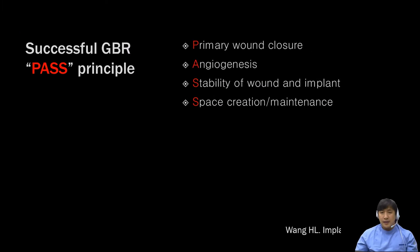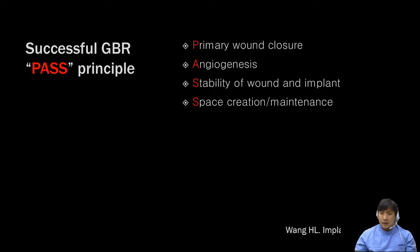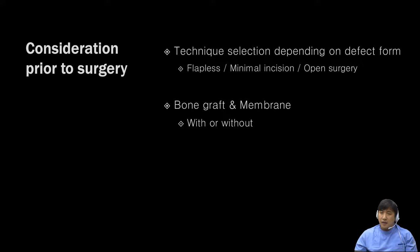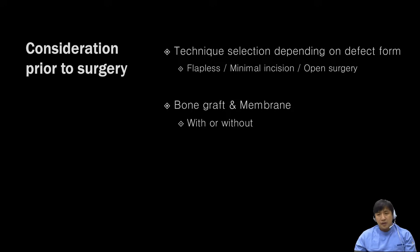I'd like to introduce Wang's first principle for successful GBR. It's very famous. The P means primary wound closure, and A means angiogenesis. The first S means stability of wound and implant. The second S means space creation and maintenance. I think the most important requirement is space creation and maintenance. You can choose the surgical technique according to the defect form — for example, flapless surgery, minimal incision, or open surgery. And you can decide if you need bone graft and membrane or not.